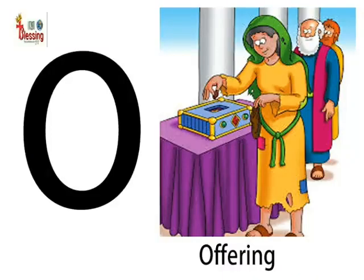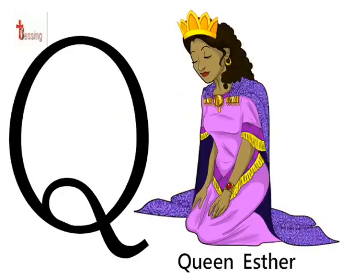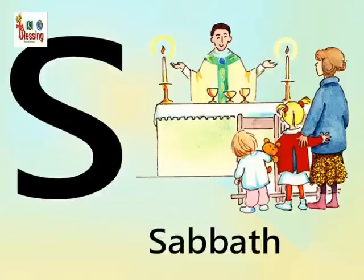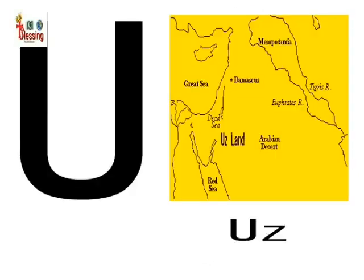O for Offering, P for Praise, Q for Queen Esther, R for Rainbow, S for Sabbath, T for Temple, U for Uz.